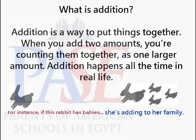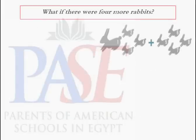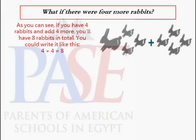Addition happens all the time in real life. What if there were four more rabbits? As you can see, if you have four rabbits and add four more, you'll have eight rabbits in total. You could write it like this: 4 plus 4 equals 8.